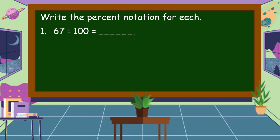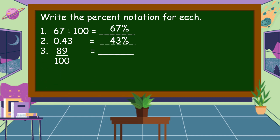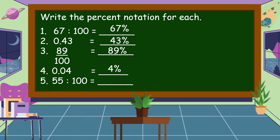67 is to 100 equals 67 percent. 43 hundredths in percent is 43 percent. 89 per hundred in percent notation is 89 percent. Four hundredths in percent is equal to 4 percent. And 55 is to 100 in percent notation is 55 percent. Congratulations, you already know how to change decimal, ratio, and fraction to percent notation.